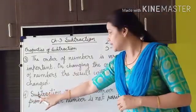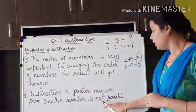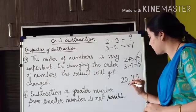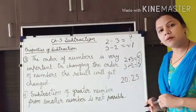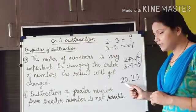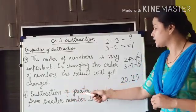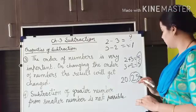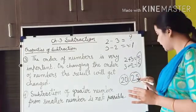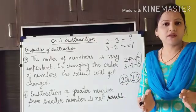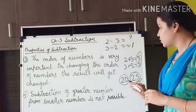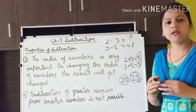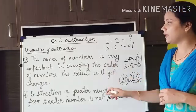The fourth property is that subtraction of a greater number from a smaller number is not possible. For example, take 20 and 25 — 25 is greater. Subtracting 25 from 20 is not possible; if I have only 20 chocolates, I cannot give 25 chocolates to another person. These are the four properties you have to remember in subtraction. Hopefully you have all understood these properties very well. Pause this video and write these properties again.